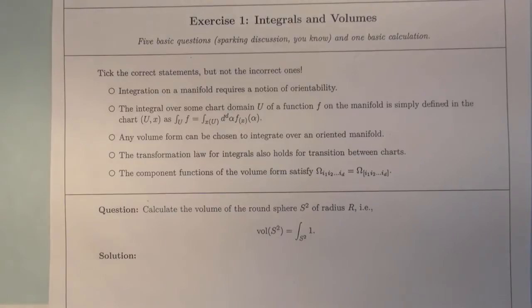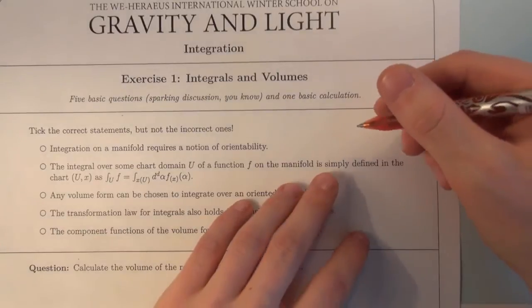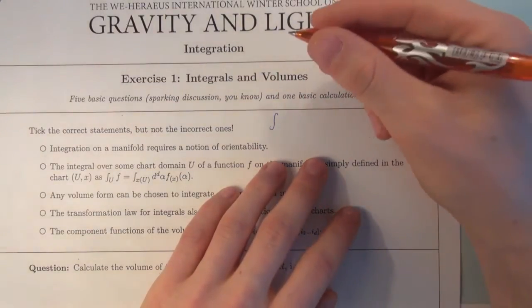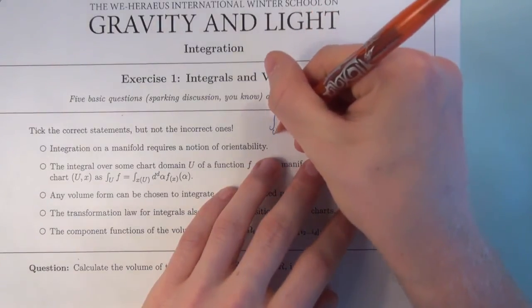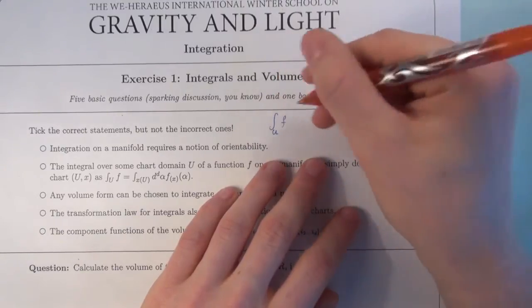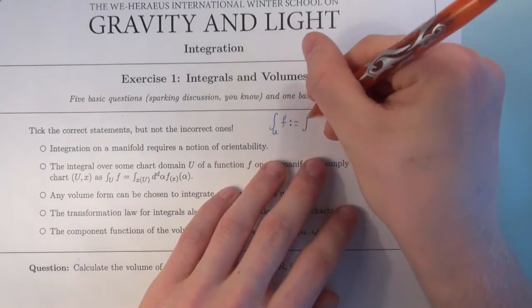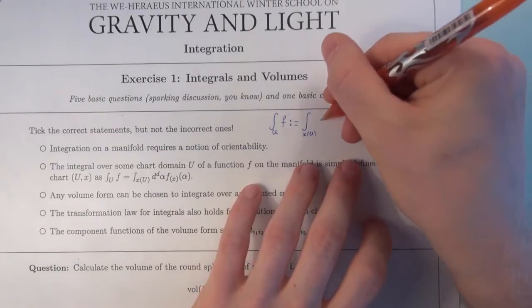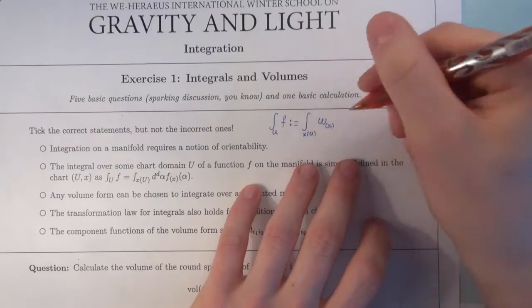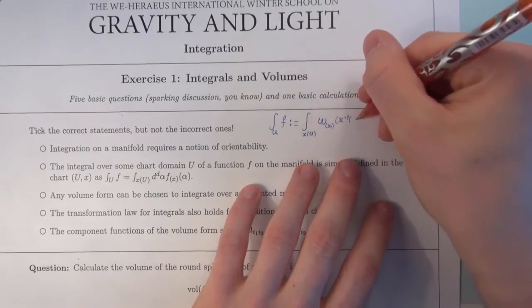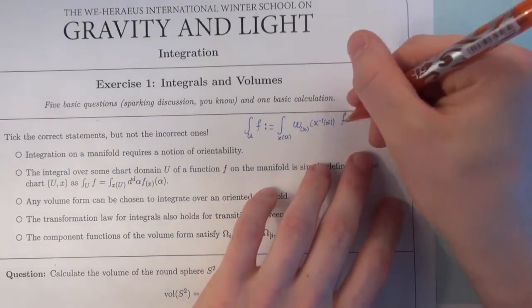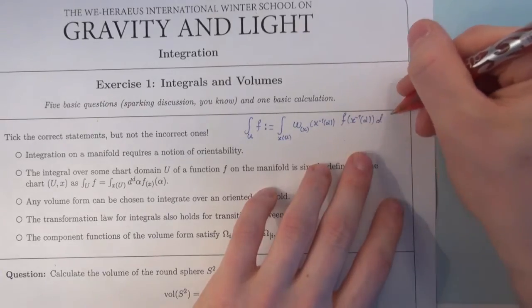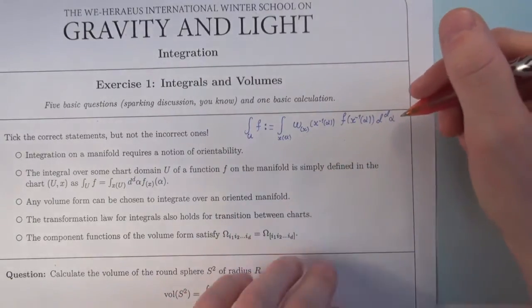This is certainly right. Because we tried to define the integration of function with respect to a chart. And of course, such a definition has to be independent of the chosen chart. You defined the integral over a chart domain u of a function f as the integral over the image of the chart domain on the chart map. Then you made use of a volume form to define these omegas, which depend on the chosen chart and on the points where you evaluate. And the f you have to consider also in the chart, here they enter x inverse of alpha and it is a d-dimensional integral and the integration variables we call alpha.